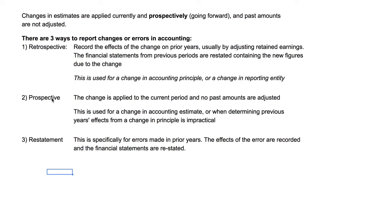Prospective application is the easiest and most simple. This is used when you have a change in an accounting estimate — something like a change in your estimate of depreciation or, in this example, the warranty liability. You apply the change in the current period and no past amounts are adjusted. The third one is restatement. This is specifically for errors made in prior years. If accounting errors are detected and they're material, the effects of the error are recorded and the financial statements are restated.